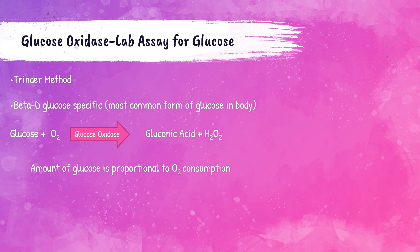The Trinder reaction or glucose oxidase test is another method used to determine glucose in a patient sample. The enzyme glucose oxidase catalyzes the oxidation of glucose to hydrogen peroxide and gluconic acid. The amount of glucose is proportional to the amount of O2 consumed during the reaction. Like the hexokinase method, this is now performed on large chemistry analyzers in most labs in the United States rather than manually.